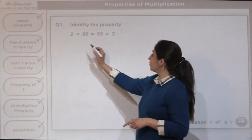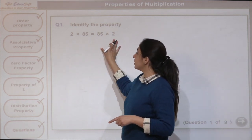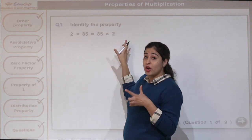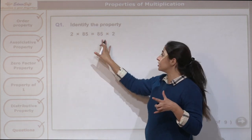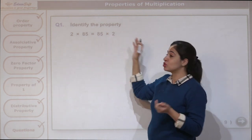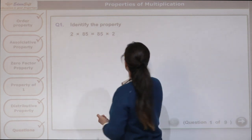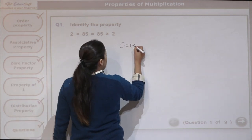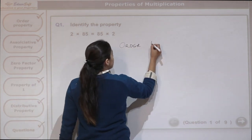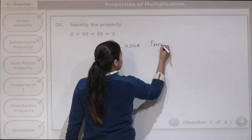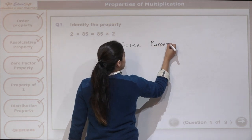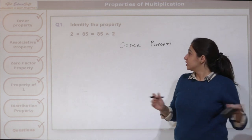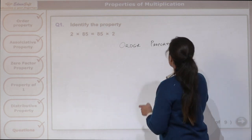What do we have? We have 2 factors: 2 times 85. We have changed the order of the factors — this is now 85 times 2. So this property is the first one, the order property. We have identified the property.